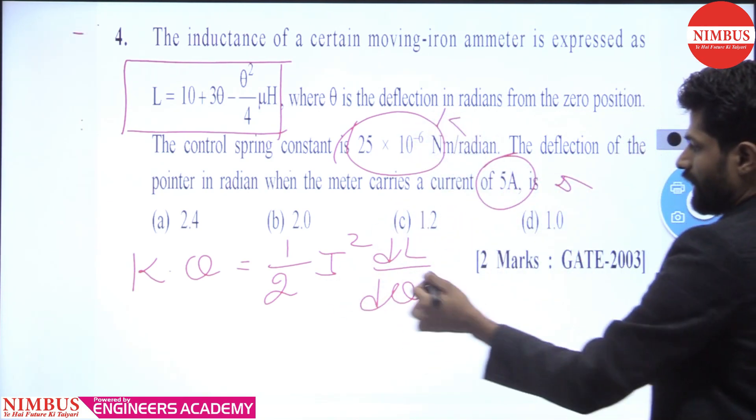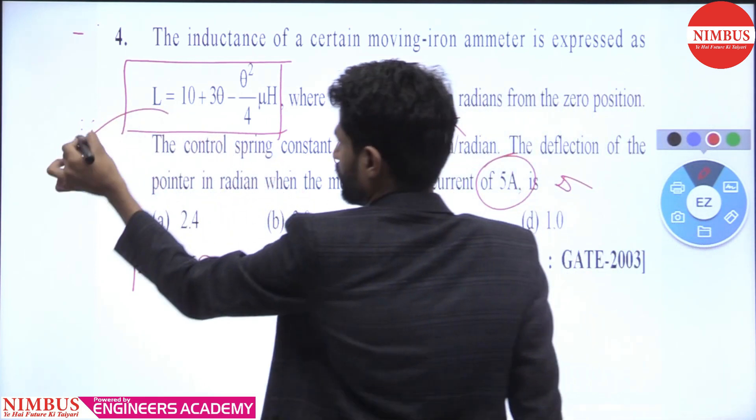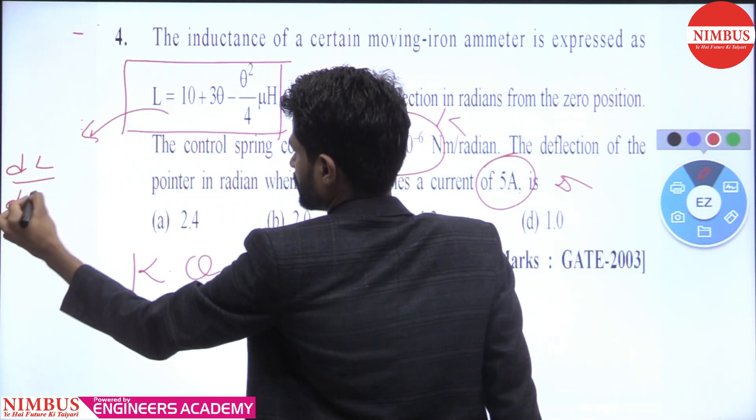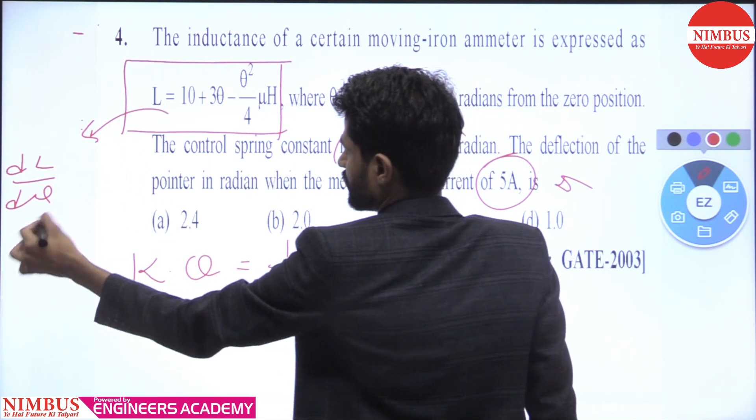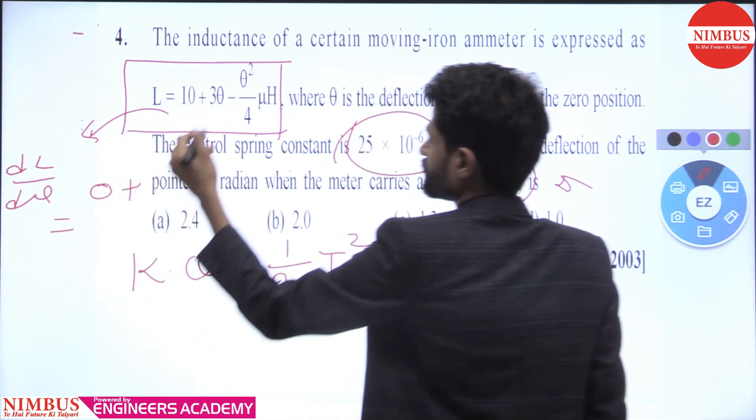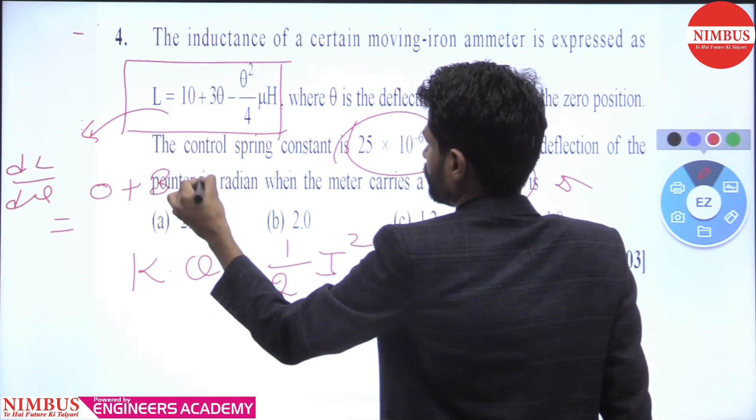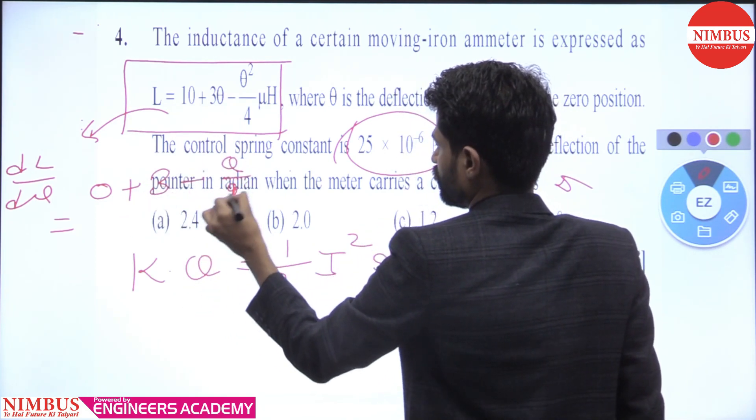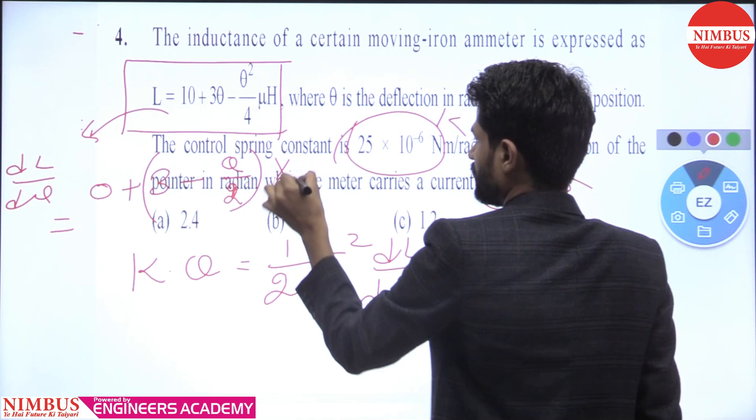This is I and dL by d theta we can calculate. To find dL by d theta here, this is 10 to the 0 plus 3 minus theta by 2 into 10 to the power minus 6.